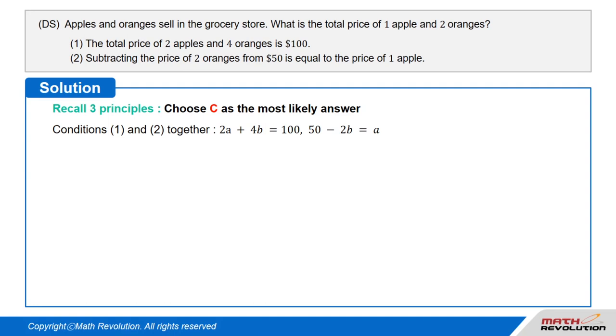Recall three principles. Choose C as the most likely answer. Let's look at both conditions together. The combined information is 2 times A plus 4 times B equals 100, and 50 minus 2 times B equals A.